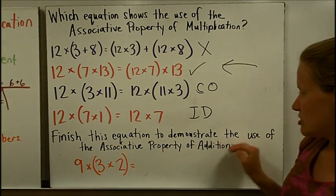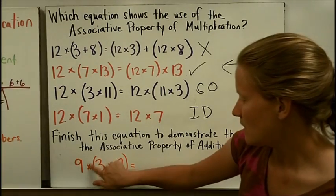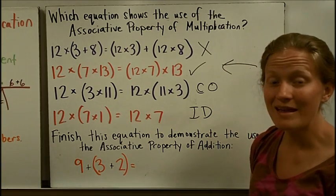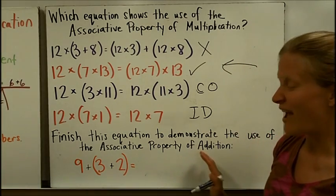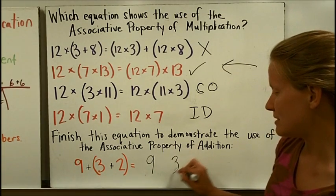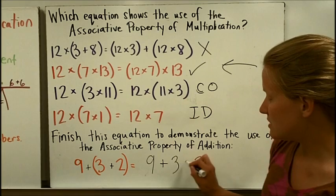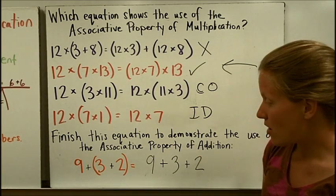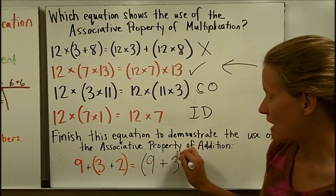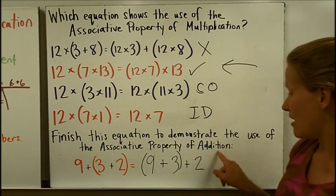Finish this equation to demonstrate the use of the associative property of addition. In the associative property of addition, I'm going to start by putting the numbers in the same exact order — remember, the order does not change. I'll use the same operations, and then I'm going to put my parentheses around two different numbers, grouping the 9 and the 3 together. This demonstrates the associative property of addition.